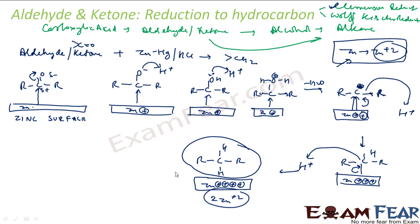The overall process: I have zinc surface and R-CO-R; the C=O pi bond breaks, carbon gets a positive charge and oxygen gets a negative charge; zinc provides electrons forming a C-Zn bond; H⁺ attacks O⁻, then another H⁺ attacks giving H2O leaving; carbon gets positive charge; zinc donates electrons again; H⁺ adds to give the final CH2 product. This is Clemmensen reduction using zinc amalgam and HCl.